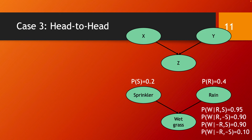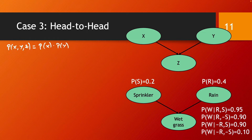To prove the conditional independence of the head-to-head connections, we can start from the joint probability distribution that we write based on the structure of the model. The joint probability of x, y, and z is equal to — looking at this model, x and y don't have any predecessor — so that gives us p(x) times p(y) times the conditional probability of z given x and y.